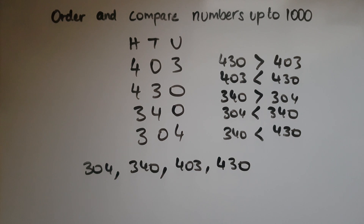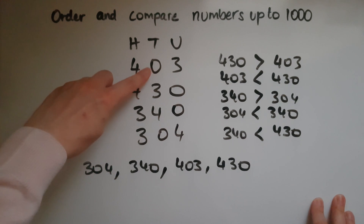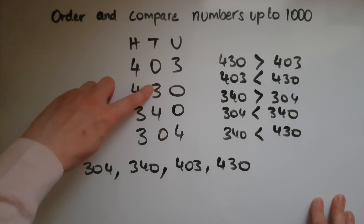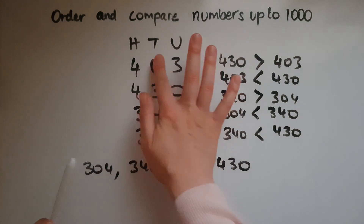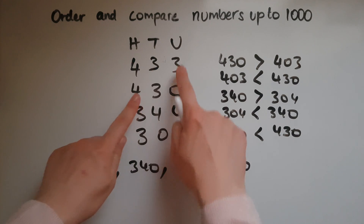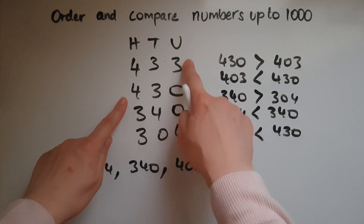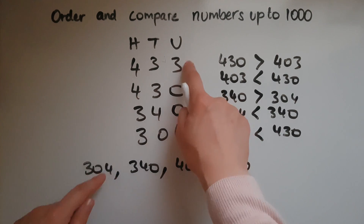To compare numbers, first look at the hundreds — whichever has more hundreds is bigger. If the hundreds are the same, look at the tens; if one has more tens, that's bigger. And if the tens are also the same, then look at the units — the one with more units is going to be bigger.